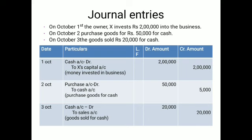Third is goods sold for cash. When goods are sold for cash, cash is coming inside the business — that is an asset increasing, so Cash Account is debited. The goods sold means stock is decreasing, which is also an asset. So the next asset is decreasing with the name of Sales Account, which is credited. In some cases, purchase can be considered an expense and sale as revenue, but the answers will be the same.